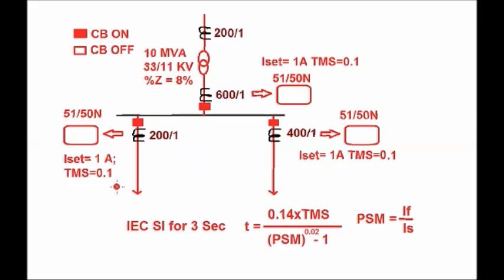For all the relays, the IEC standard inverse curve with TMS = 3 seconds is chosen, where the trip time T is given by: T = 0.14 × TMS / (PSM^0.02 − 1). Here PSM is the plug setting multiplier, defined as the ratio of the fault current to the current setting value.